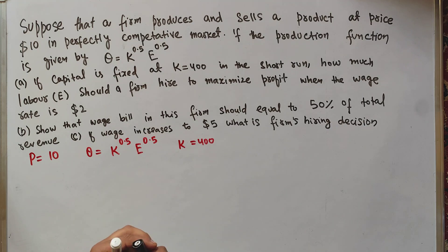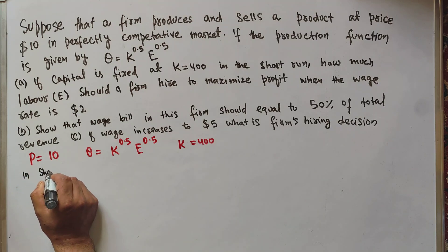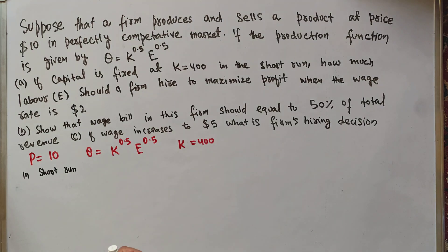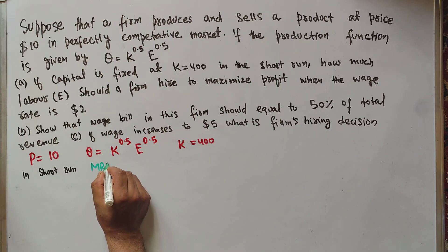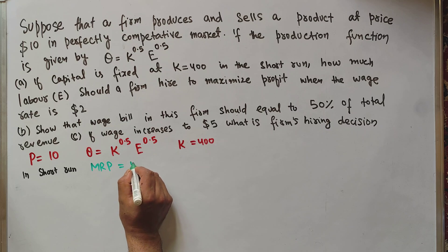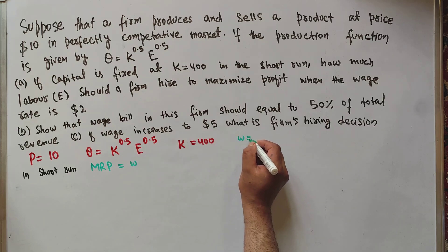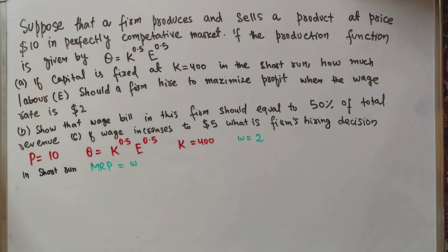To maximize profit, in the short run, the profit-maximizing decision of a firm requires that it equates the marginal revenue product with the wage rate. The wage rate is given as $2, so we need to find the marginal revenue product.